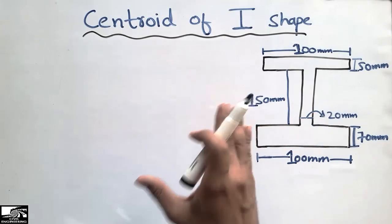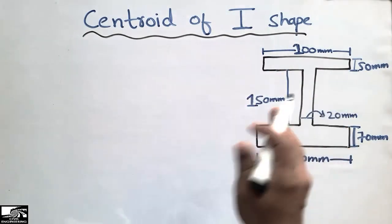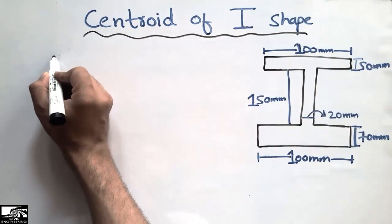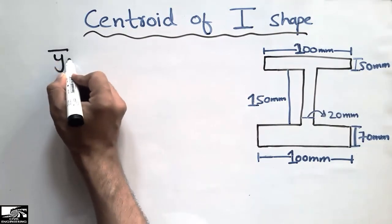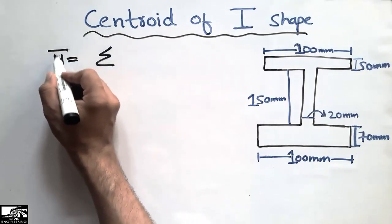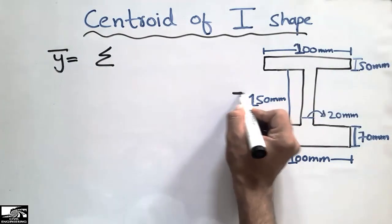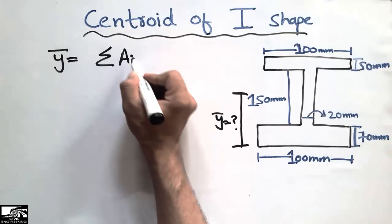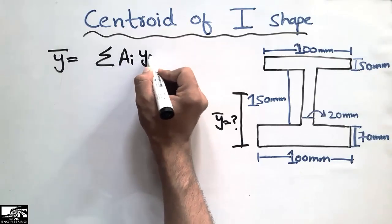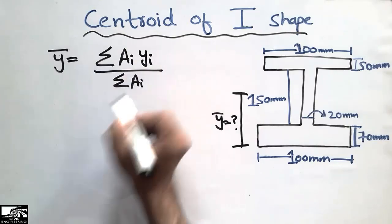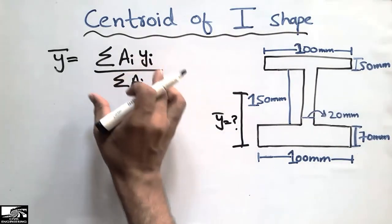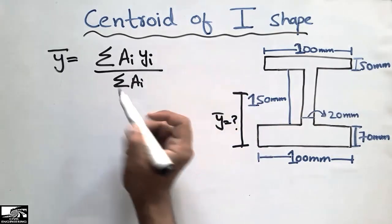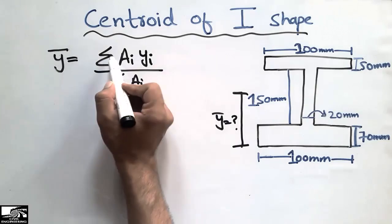I will explain in full detail the centroid of this object — watch this video fully and you will be able to learn the centroid of any shape. To find the centroid, first I will write the formula. You can find the centroid of any shape using this formula: ȳ is the centroid, and ȳ is unknown to us. ȳ equals the summation of individual areas times individual centroids, divided by the summation of areas.